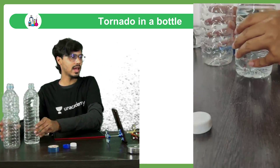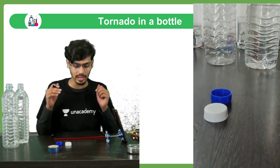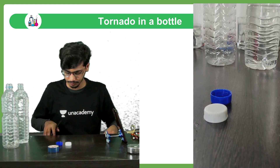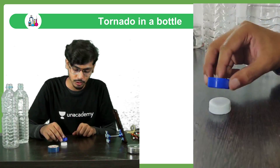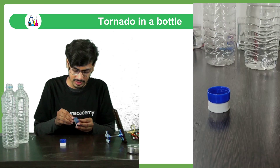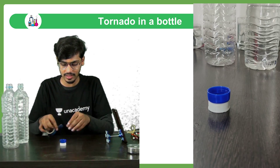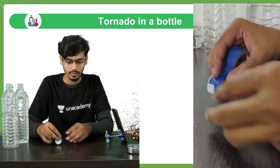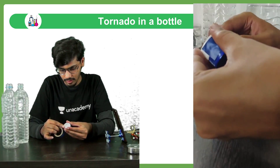Right now you can see that I have two bottles and there are two caps. I have the two caps here. What we have to do is keep them on top of each other — one on top of another — and we will just stick some electric tape on top so that it holds very tightly. I'll try to be as clean as possible with this.